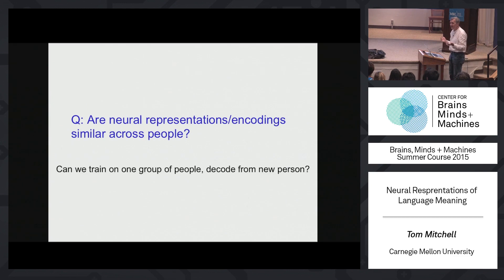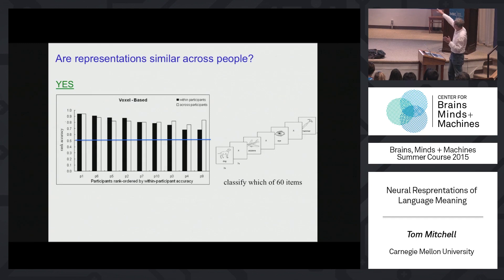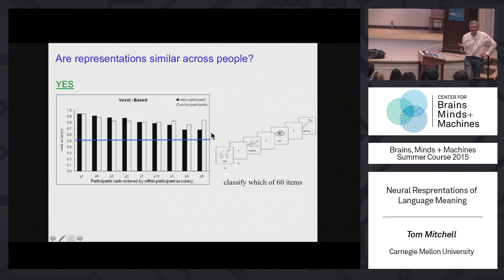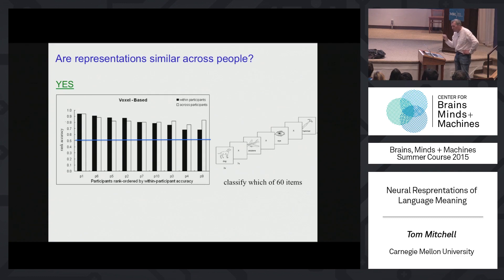In black you see the accuracy when we train on data from the same person we're testing on. In white you see the accuracies we get when we train on data from all the other participants. On average we do about as well with the white bars as with the black bars — in some cases we do better training on other people, perhaps because we get to use more training examples. The important thing is this is very strong evidence that even though we're all very different people, we have remarkably similar neural encodings when we think about common nouns — something that in the year 2000 I don't think anybody understood.